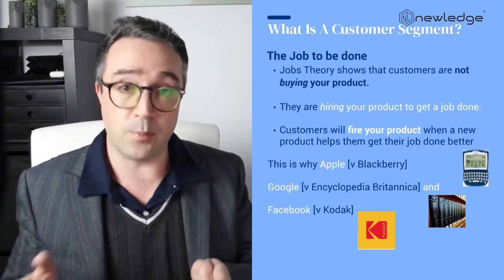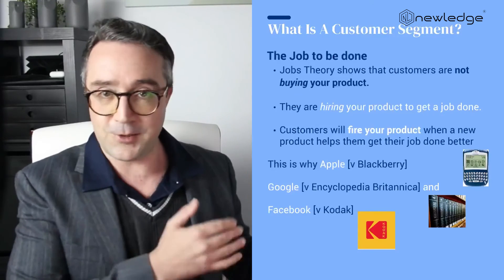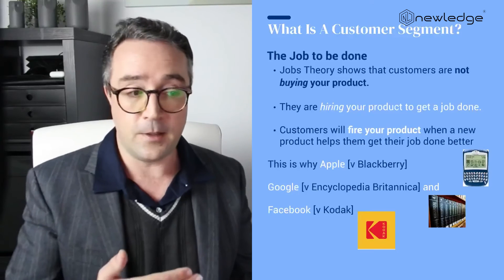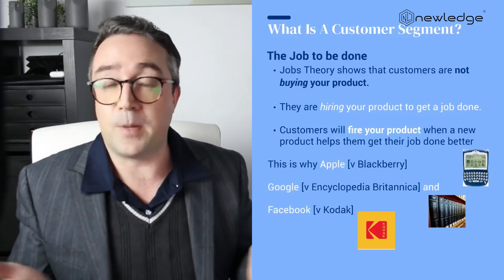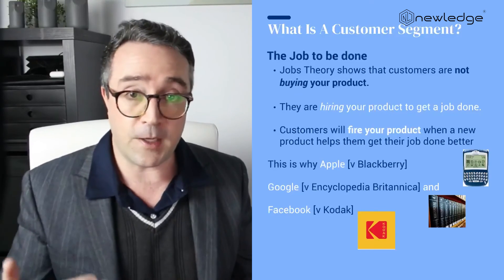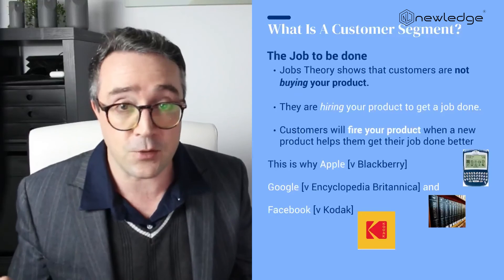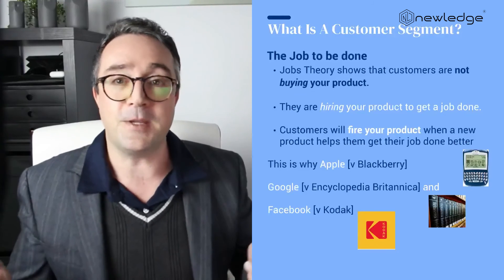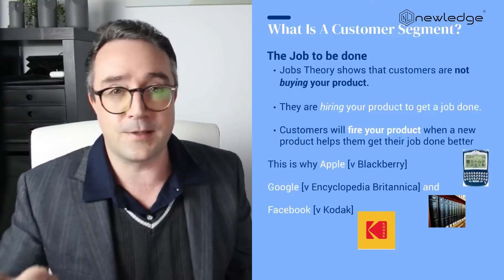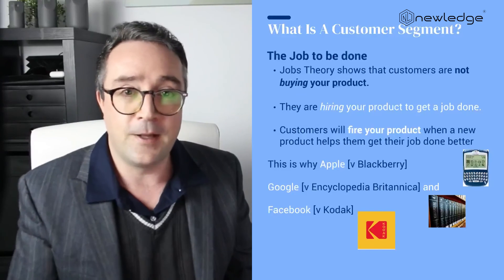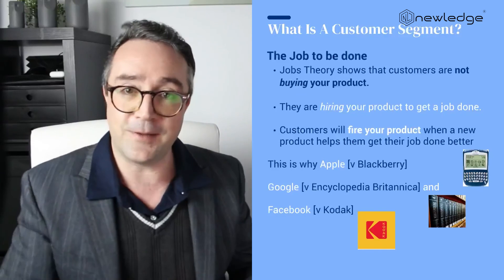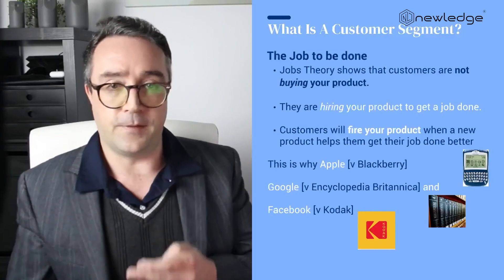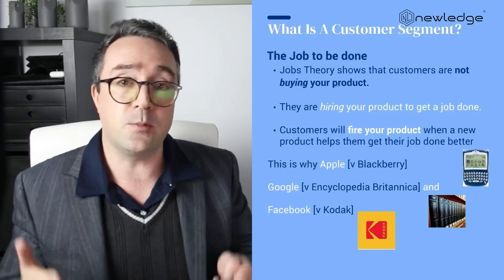Jobs Theory shows that customers are not buying your product — they are hiring your product to get a job done. This means customers will fire your product when a new product helps them get their job done better, faster, more accurately, and possibly cheaper. This is why Apple, Google, and Facebook became three of the most valuable companies in history in the exact same markets as BlackBerry, Encyclopedia Britannica, and Kodak. Those companies failed because there are no keyboard-device, encyclopedia, or film markets — these are all products that decline rapidly. But there always will be markets to execute jobs: to communicate while mobile, to find information, and to share memories. These are all stable jobs to be done.